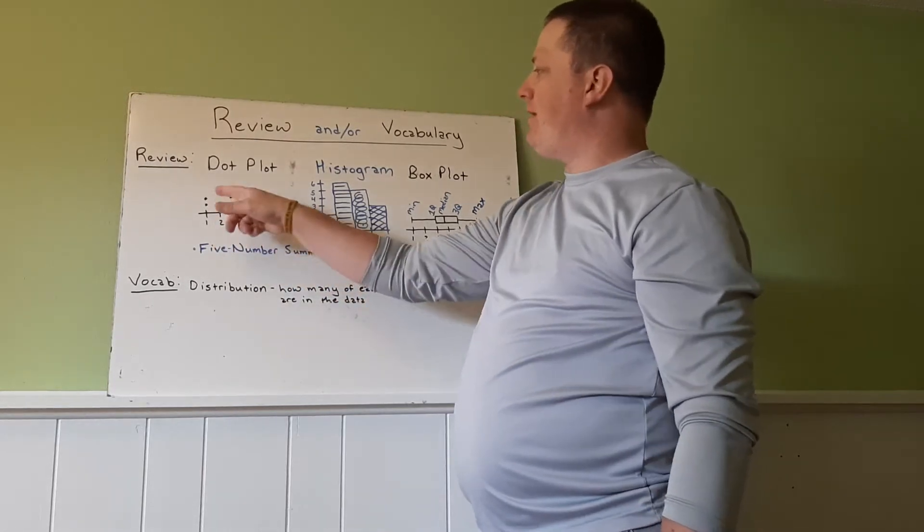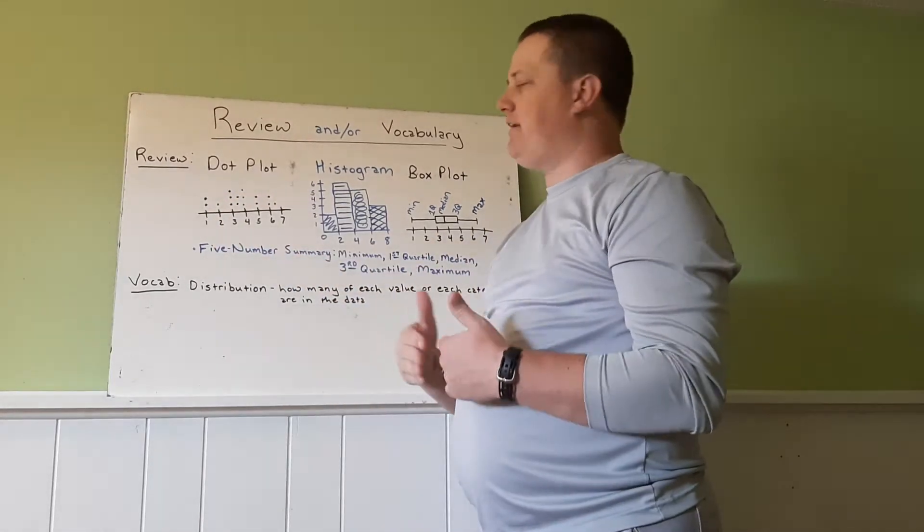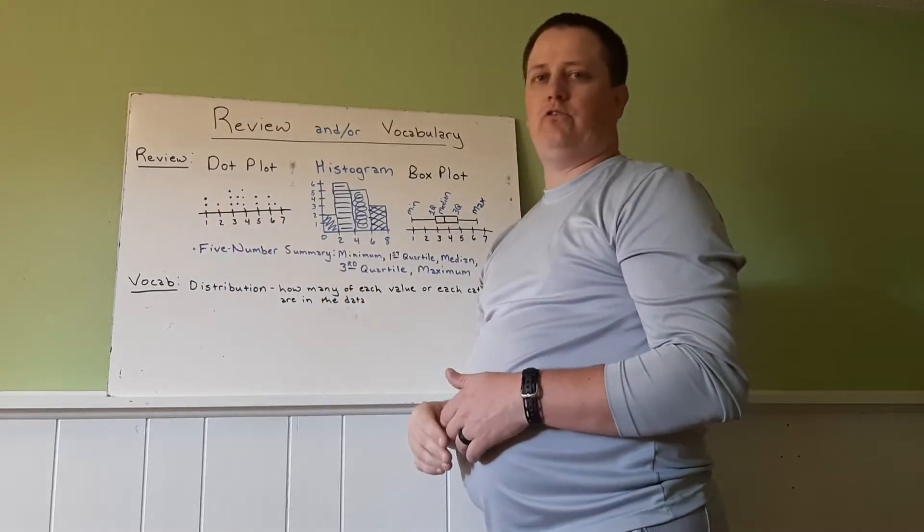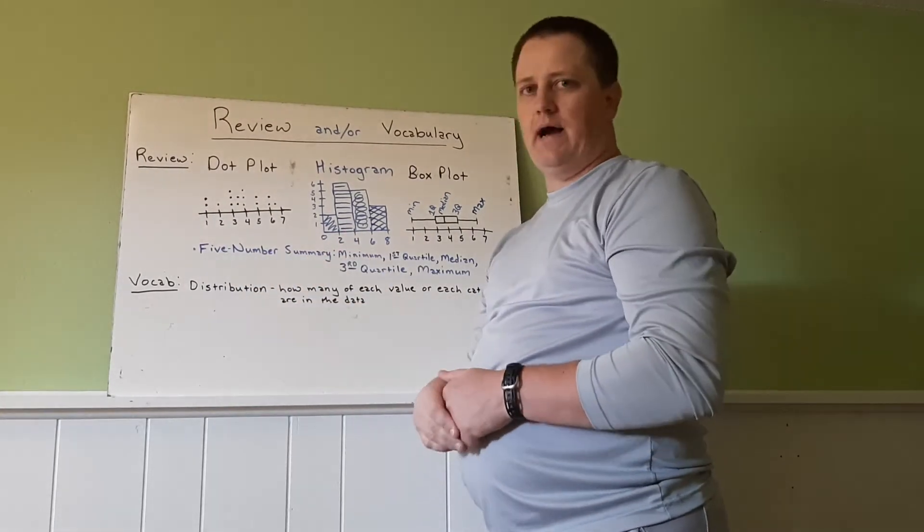which is the basic number line with the data above it as dots. So here we had two values that were ones. So there's two dots over the one.